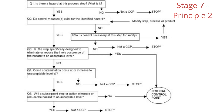Looking at this slide, you'll see there is Q1, Q2, Q3, Q4, and Q5 in the decision tree. It basically directs you to determine what is a CCP based on the questions you have to ask and the answers you provide. That is stage seven and principle number two.